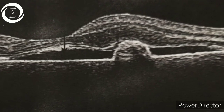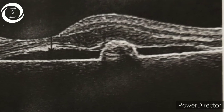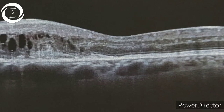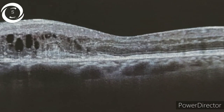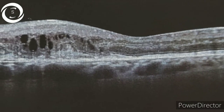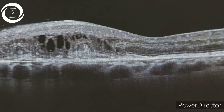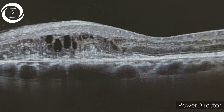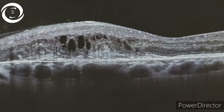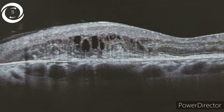Since the CNV is present above Bruch's membrane but below the RPE, that makes it type 1. In the third OCT, there is a dome-shaped elevation of the retina with loss of foveal depression, hypo-reflective intra-retinal fluid-filled cysts, and sub-retinal hyper-reflective material located above the split RPE. This is type 2 choroidal neovascularization, being present above the RPE and below the sensory retina.